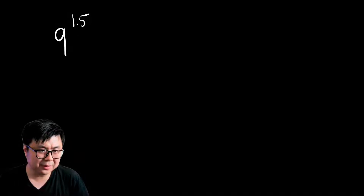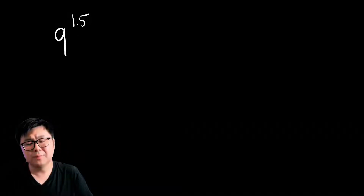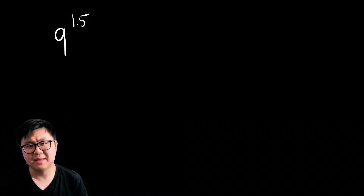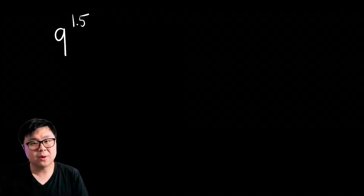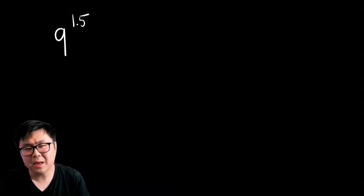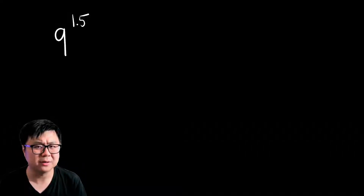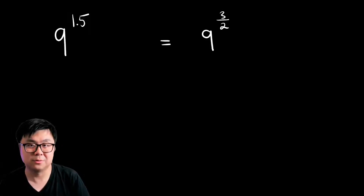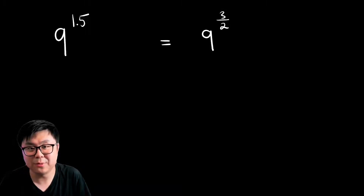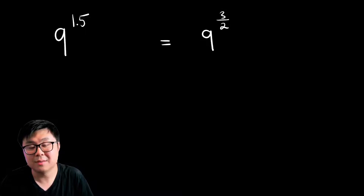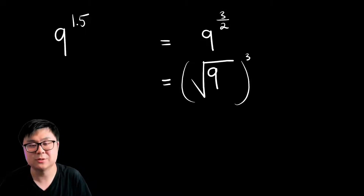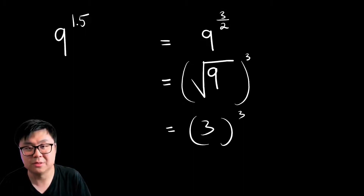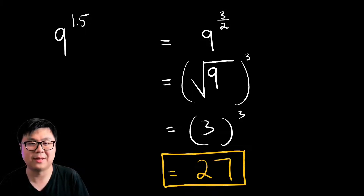Next question: 9 to the power of 1.5. You might think, I can just punch this into a calculator. But what if this is a no-calculator question? We can write 1.5 as a fraction, so that becomes 9 to the power of 3 halves. Since we have a fractional exponent, we can write it in radical form: 9 goes into the radicand, 2 goes into the index (so we don't have to write that), and 3 becomes the exponent on the outside. Now we have the square root of 9, which is 3, all to the power of 3, giving us a final answer of 27.